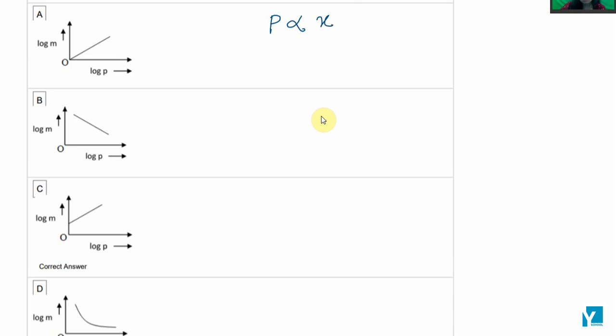This is represented by mole fraction. If we write Henry's equation, it would be like this: P is proportional to x. Or we can write it as P equals k times x.